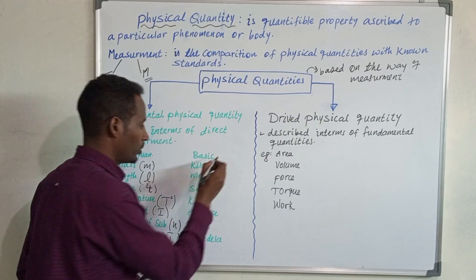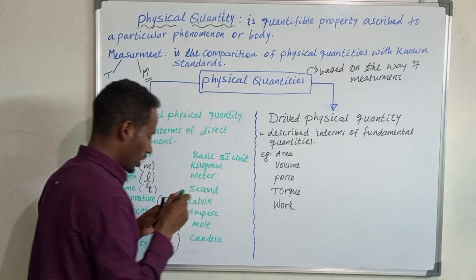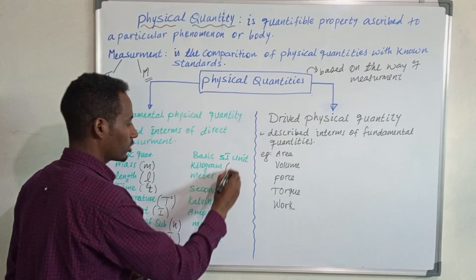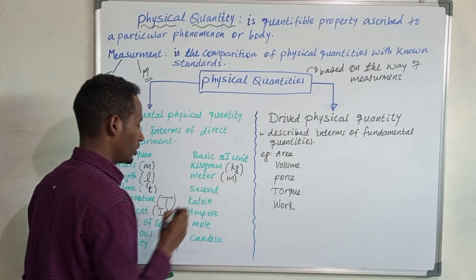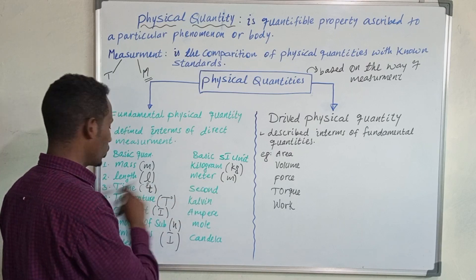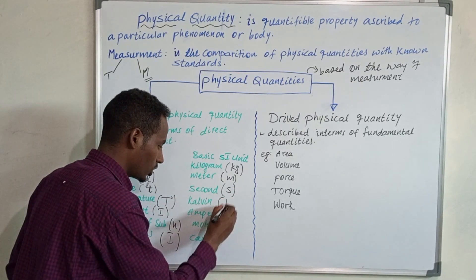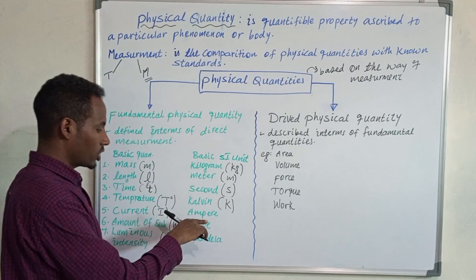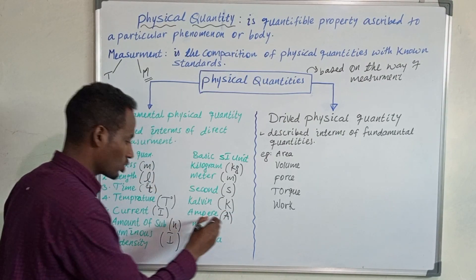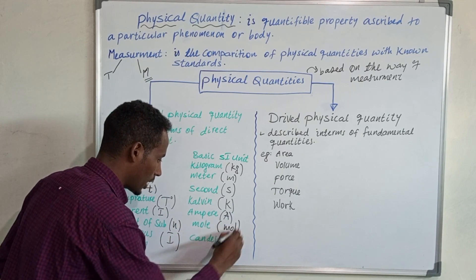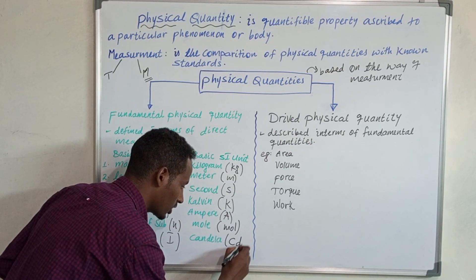For each fundamental quantity, we have a basic SI unit. Kilogram is the unit of mass, represented by kg. Length is measured in meters, represented by small m. Time is measured in seconds, represented by small s. Temperature is measured in Kelvin, represented by K. Current is measured in ampere, represented by capital A. Amount of substance is measured in moles, represented by mol. Luminous intensity is measured in candela, represented by cd.